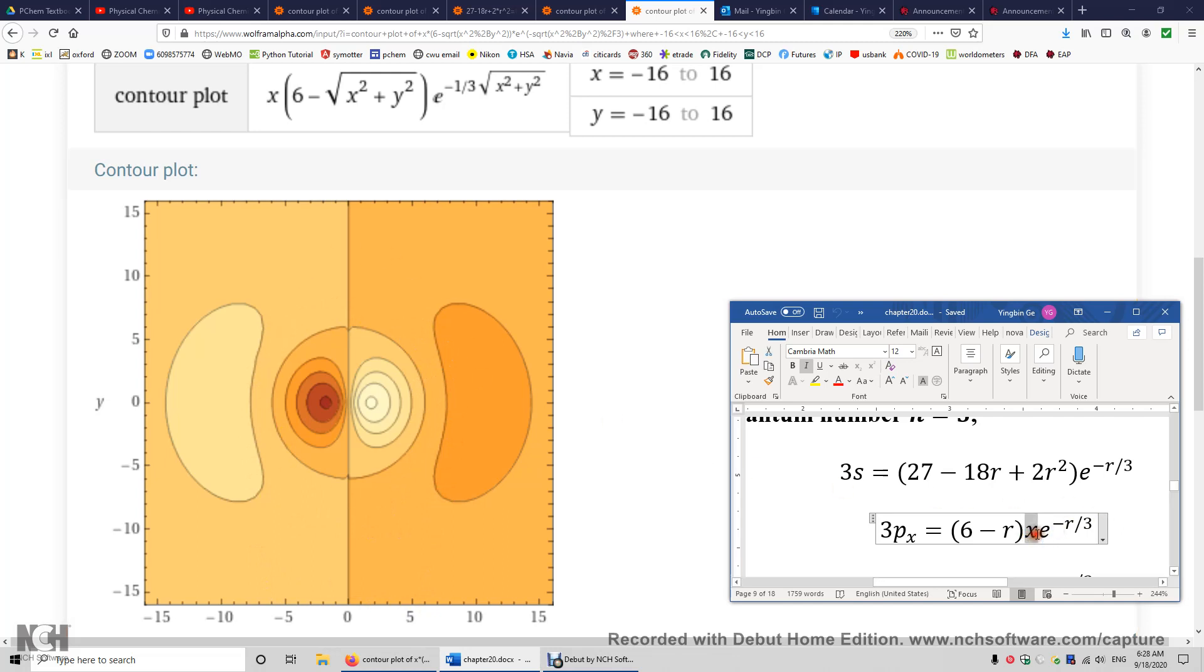Now when x is 0, we have a planar node. So on the two sides of a node, you should have two opposite signs. So over here, this one is positive. Why? Because in this region, x is positive. And 6 minus r is positive. So if this is positive, this part has got to be negative. And then this part is positive. And this part is negative. Again, positive, negative, positive, negative. We have two nodes, one spherical node at r equals 6. The other is a planar node when x is 0.